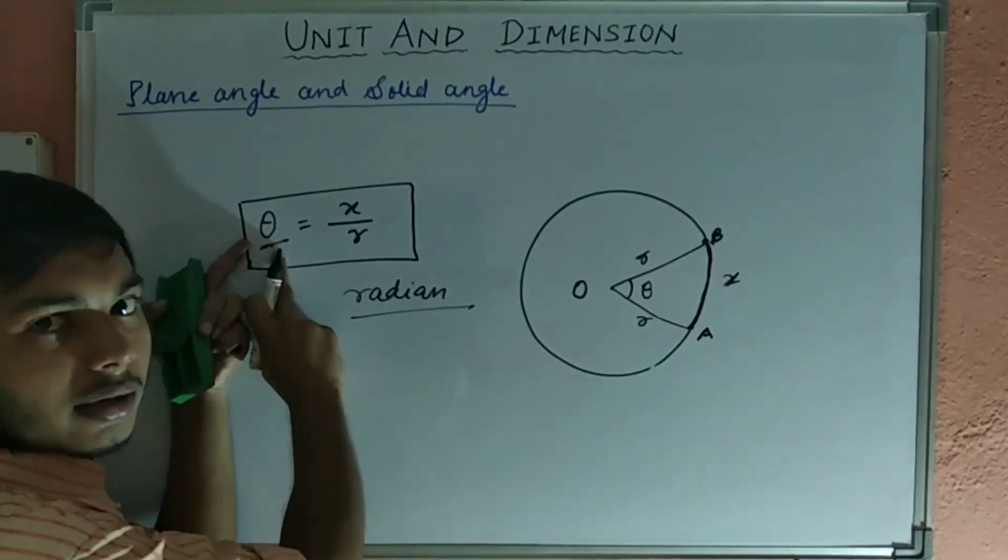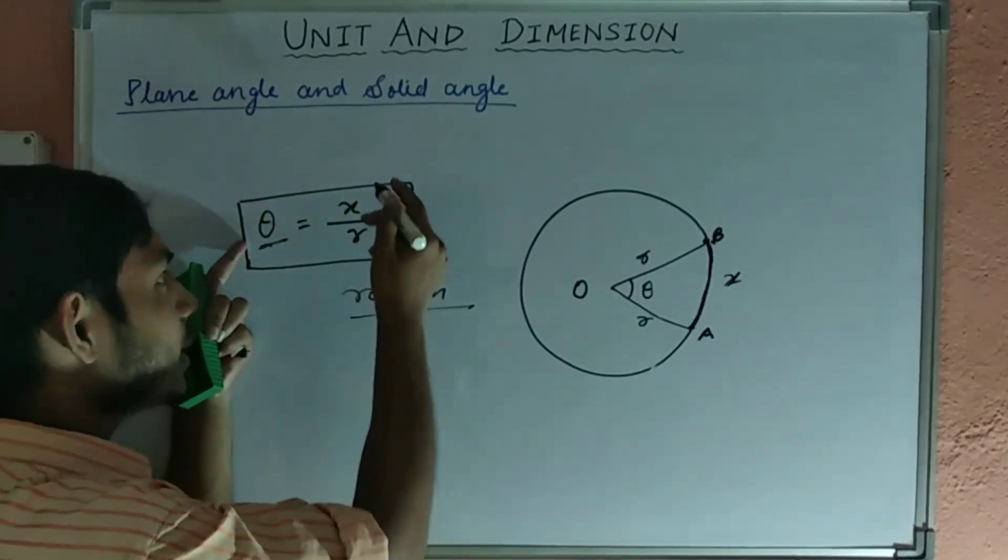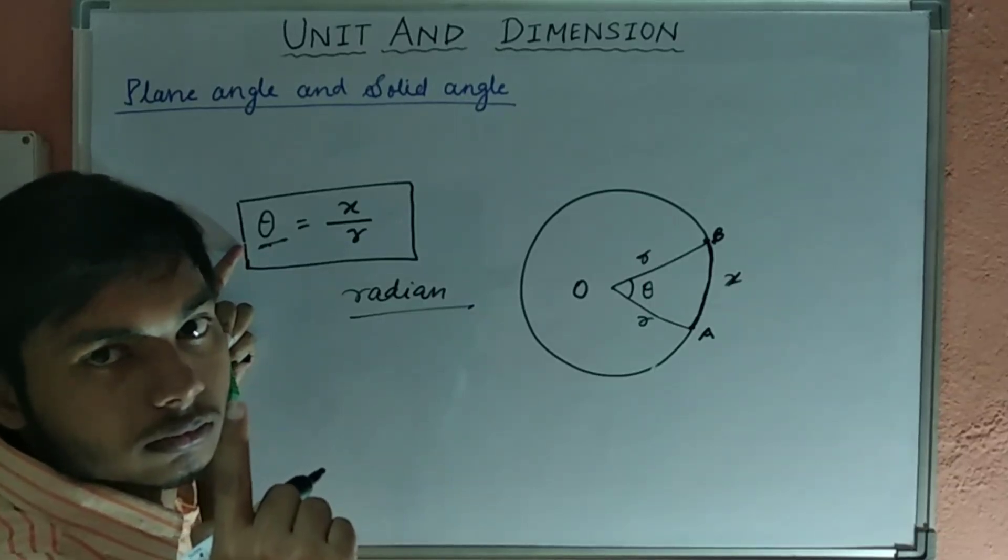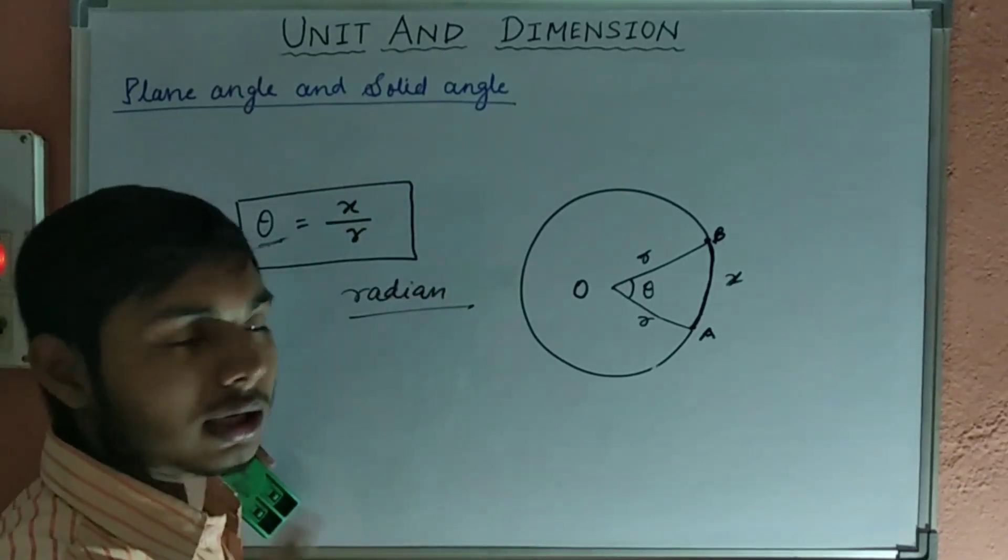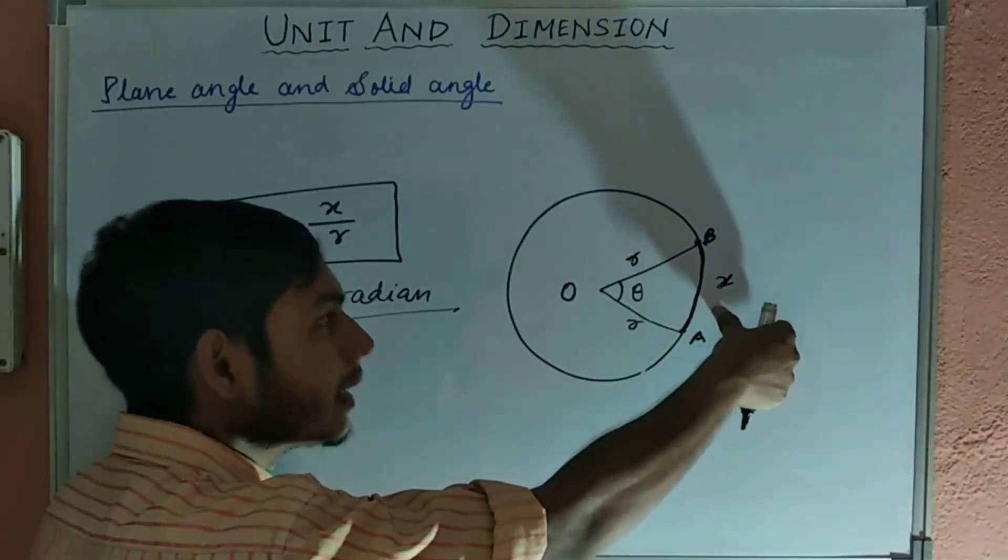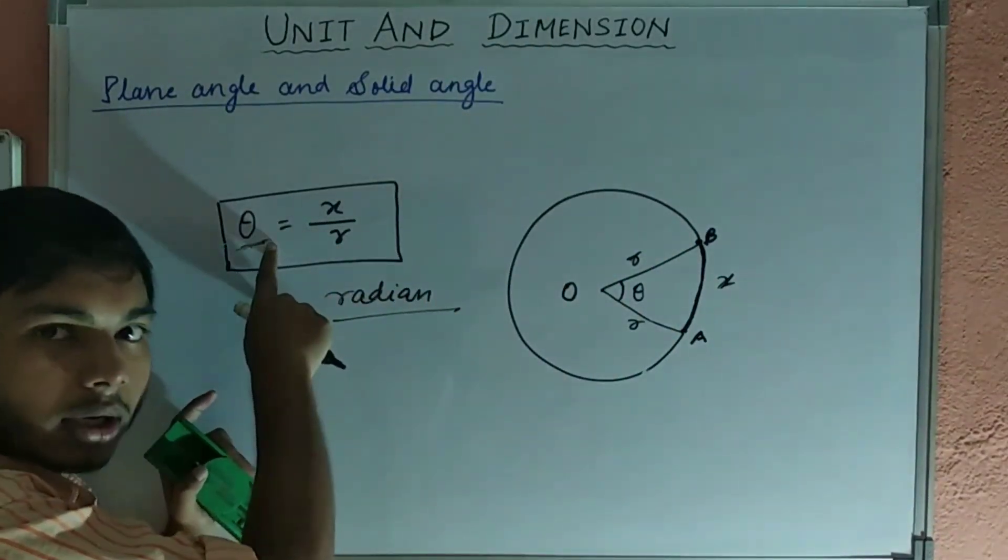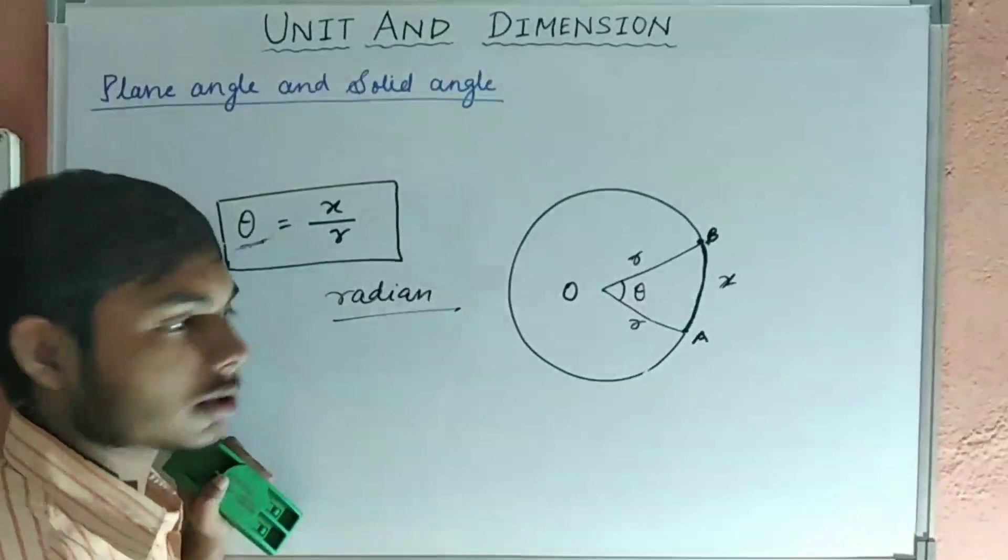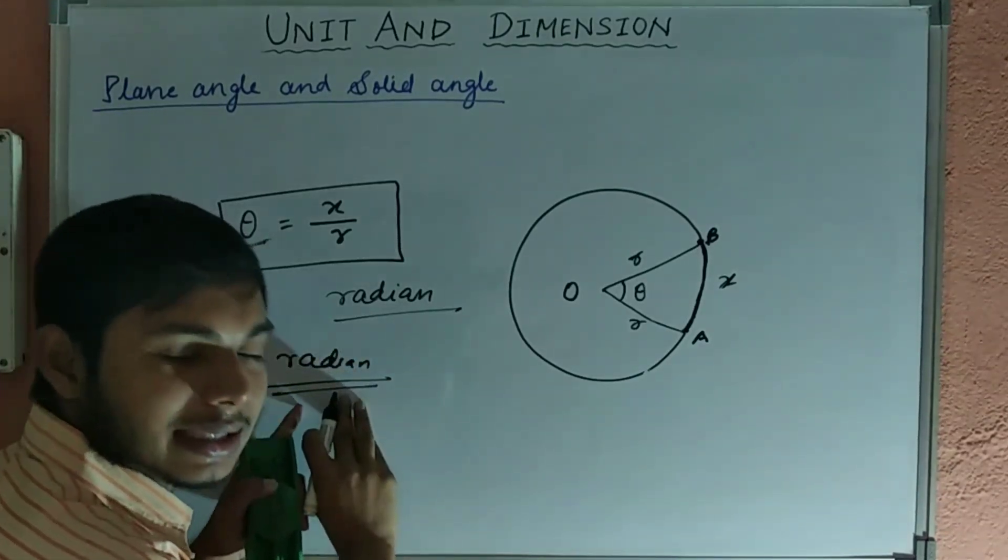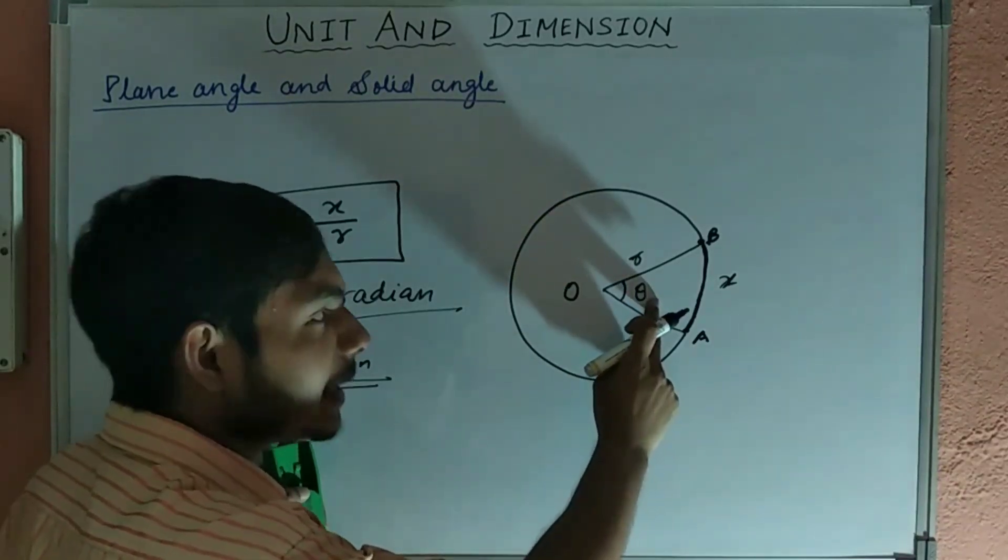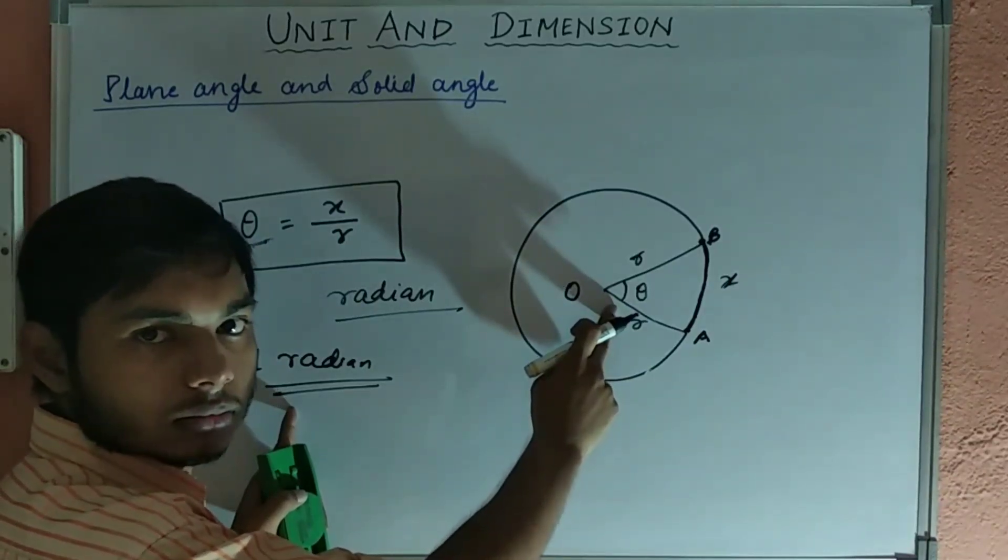Theta should be 1 radian when x and r are equal. When x and r will be equal, then the ratio will be 1. For theta of 1 radian, x and r should be equal. What is x and r? x is the arc and r is the radius. If x and r will be equal, then the ratio will be 1. Therefore, 1 radian is defined as the angle subtended by an arc equal to the radius of the circle.